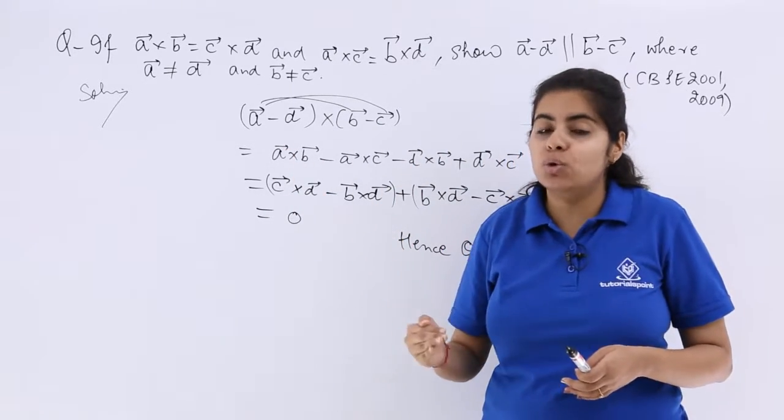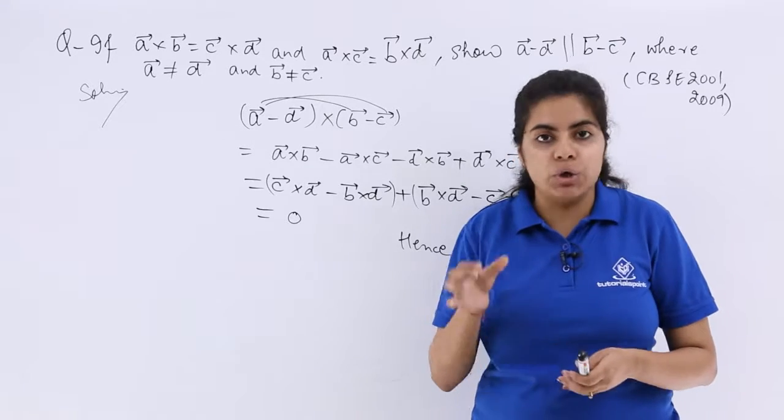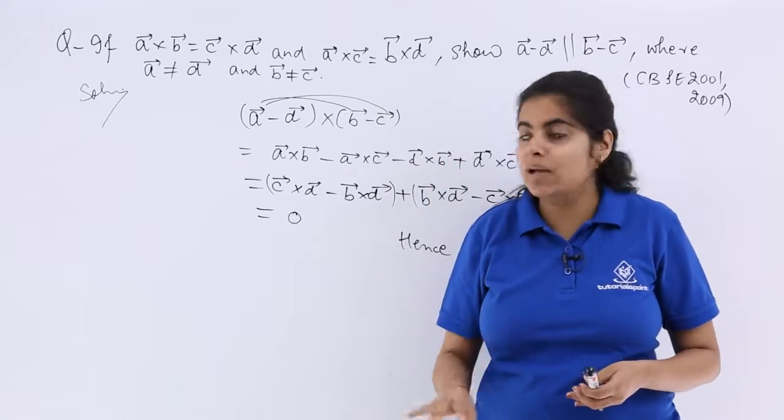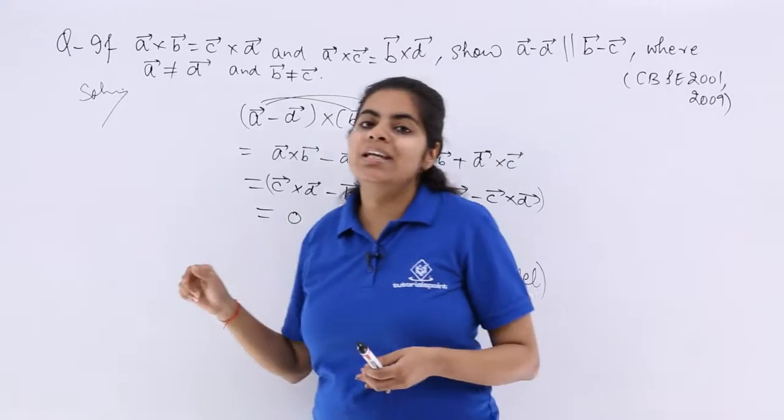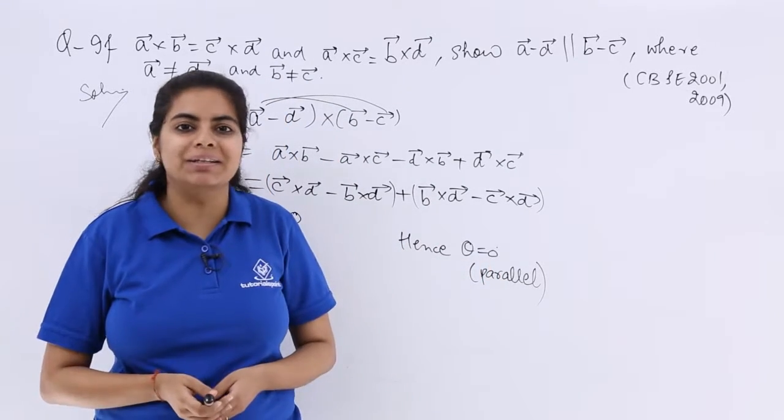So wherever you have to show that these are parallel, either you can go about by doing the dot product and cos 90° is 0, so θ should become 90 degrees. Or you can do by cross product wherein I can say that θ is 0, so they are parallel.